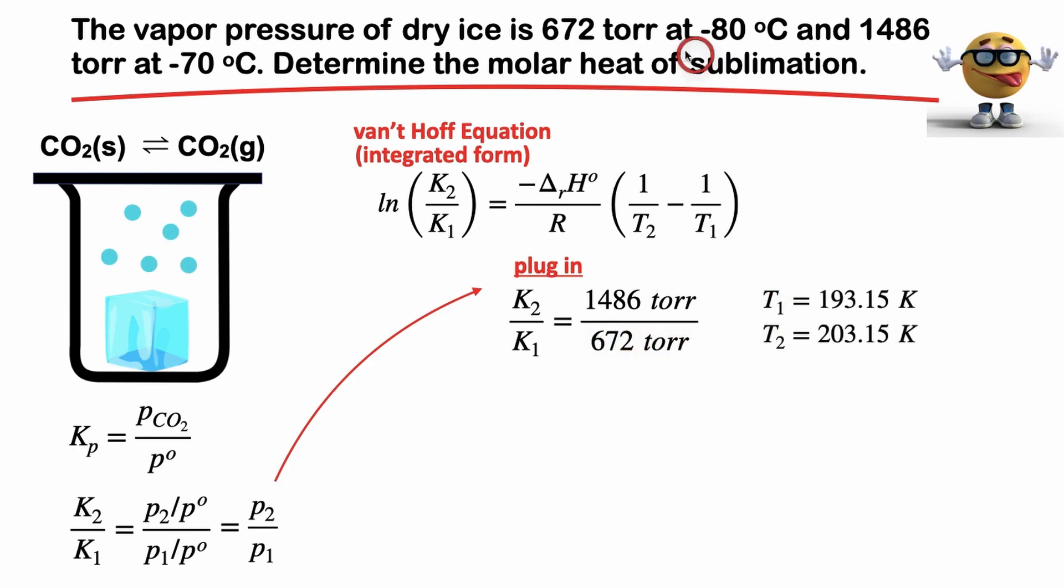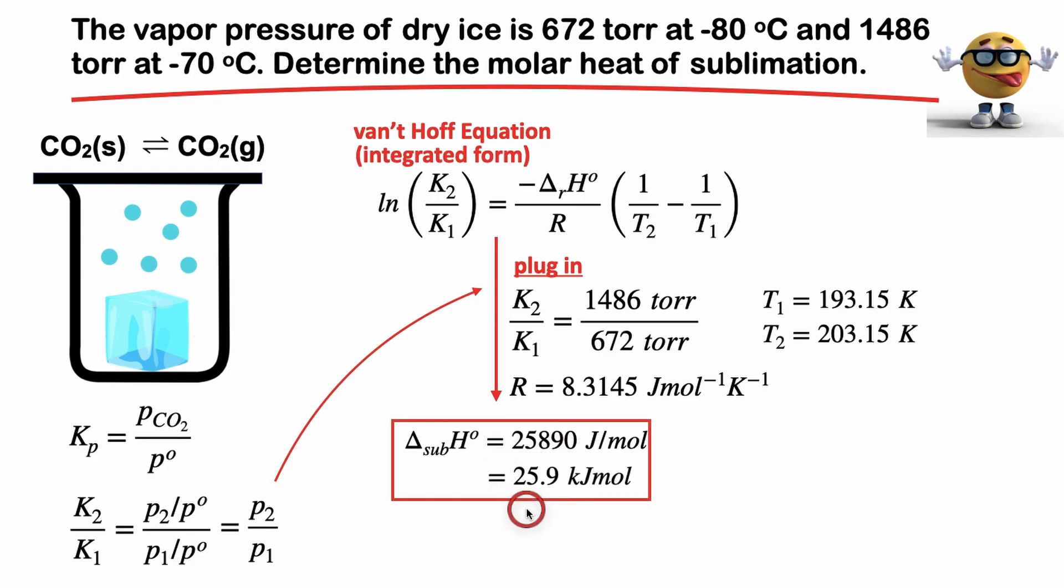And our temperature, so if this is P1, then negative 80 degrees Celsius is 193.15 in Kelvin. We need to use these temperatures in Kelvin. Then negative 70 degrees Celsius is 203.15 Kelvin. And we want to use the R that has joules in it, 8.3145. If we plug all of that in and kind of do some algebra, we get a change in standard enthalpy of sublimation or the molar heat of sublimation of 25,890 joules per mole. In kilojoules per mole, it's 25.9 kilojoules per mole.